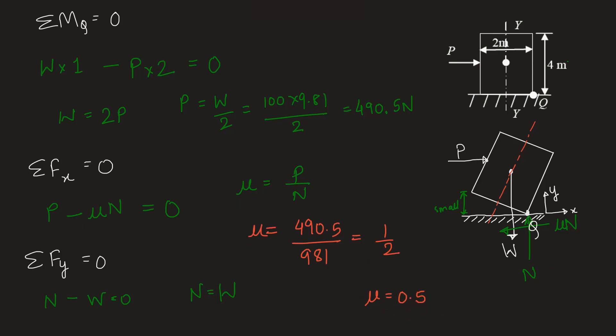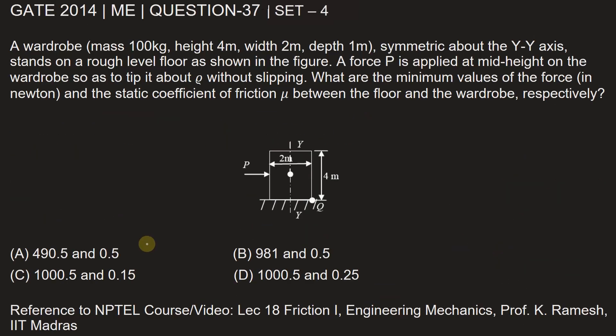Let's go back and mark the correct option. So we found out capital P is 490.5 and mu is 0.5. So the correct answer is in option A. Options are very confusing. Mark them carefully because option B is 981 which is just double of 490.5 and we have come across this value in the solution. So that might confuse you. Be careful while marking the option, option A.